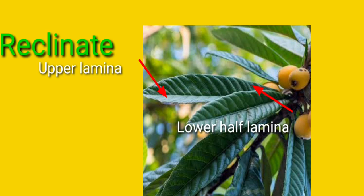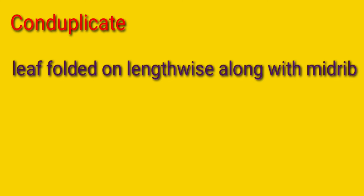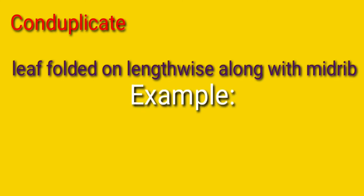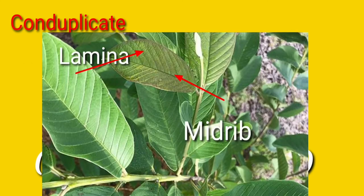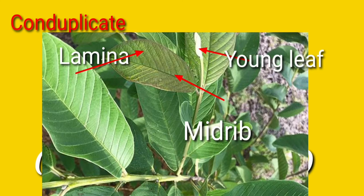If you have a chance to see the young leaf, have a look at it. Next one is the conduplicate. In this type of Ptyxis, the leaf folds lengthwise along with the midrib. Example: guava, binomial name Psidium guajava. This is the lamina portion and midrib. You can find the young leaf which folds towards both margins keeping the midrib as a center — lengthwise along with the midrib.